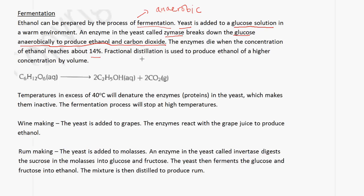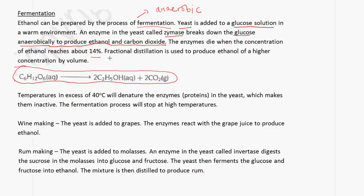The enzymes die when the concentration of the ethanol reaches about 14%. Fractional distillation is used to produce ethanol of a higher concentration by volume. The equation for fermentation is: C6H12O6 → 2C2H5OH + 2CO2. The carbon dioxide is seen as bubbles, and the ethanol has a concentration of about 14% by volume. If you want to obtain ethanol of a higher concentration, you need to perform fractional distillation.